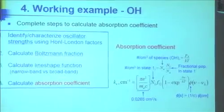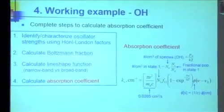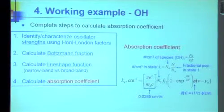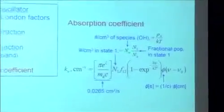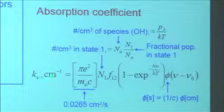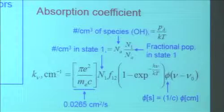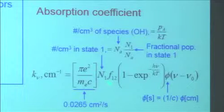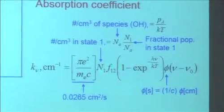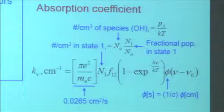Here's the working example. You need oscillator strengths, Boltzmann fractions, and a line shape function — those are the elements. We keep track of our equation of state: P equals NkT, ideal gas. Here's our Boltzmann fraction. The number density of OH times the Boltzmann fraction in that state gives the population in the absorbing state. The fractional transmission is given by e to the minus K_ν L. The absorption coefficient K_ν requires: a constant, the number density in the absorbing state, the oscillator strength for the transition, an induced emission term (almost always one), and the line shape function.